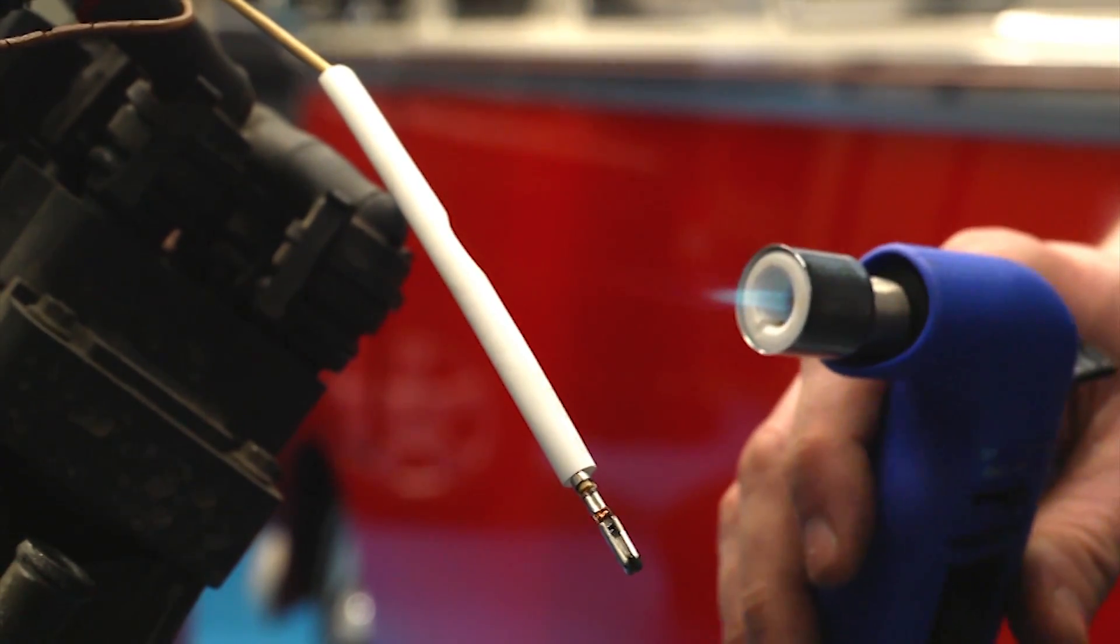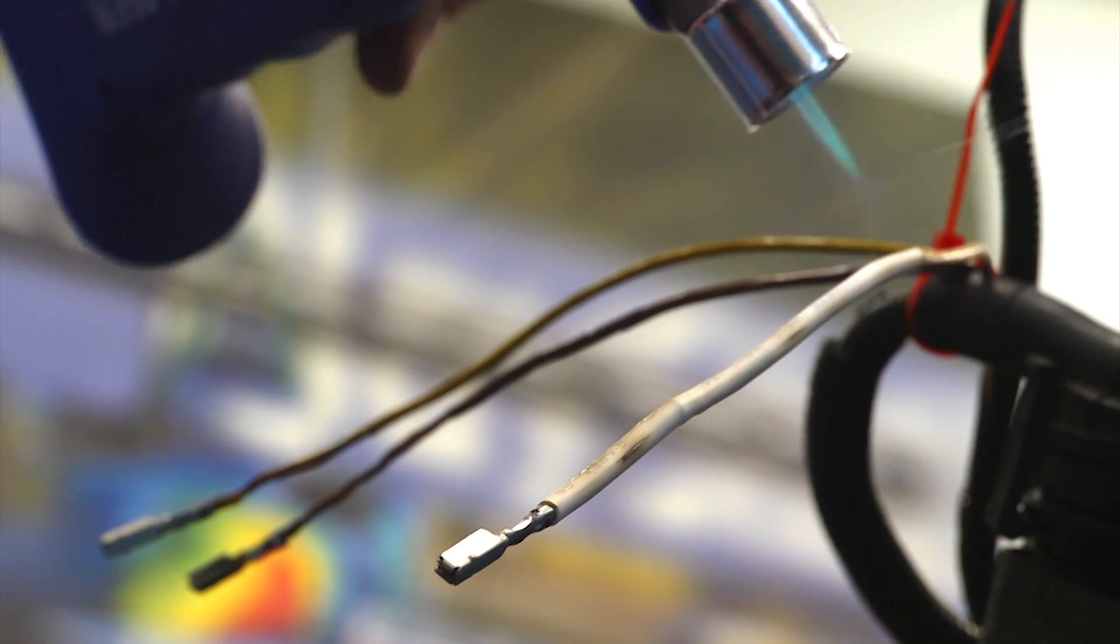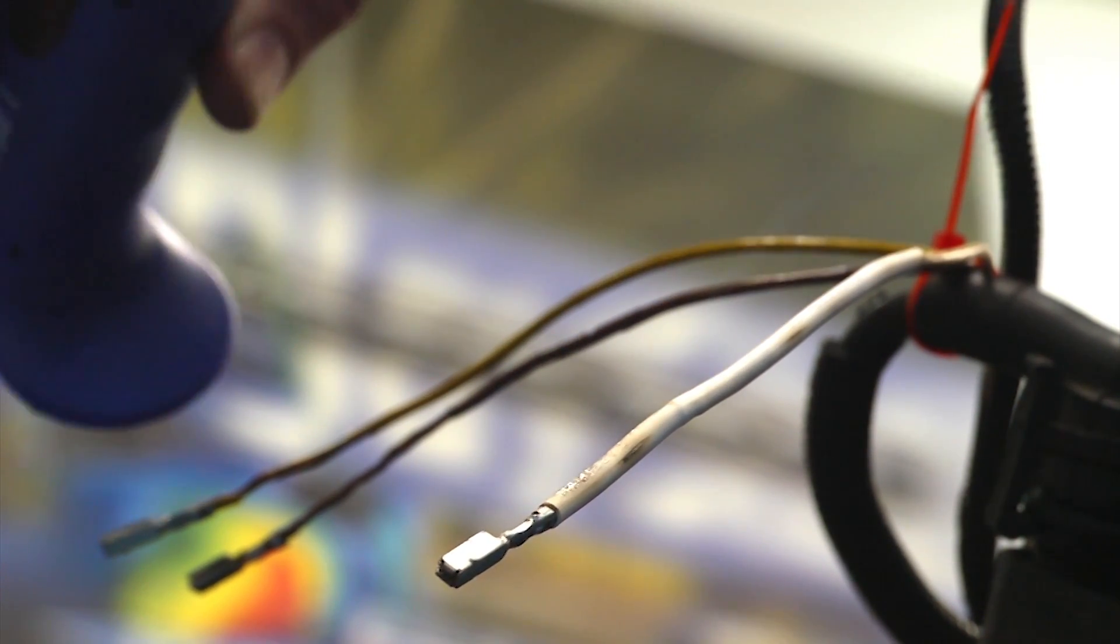It can be tempting to use a flame on heat shrink tubing, but this heat is uncontrolled and unless great care is taken, the tubing can burn and become damaged.